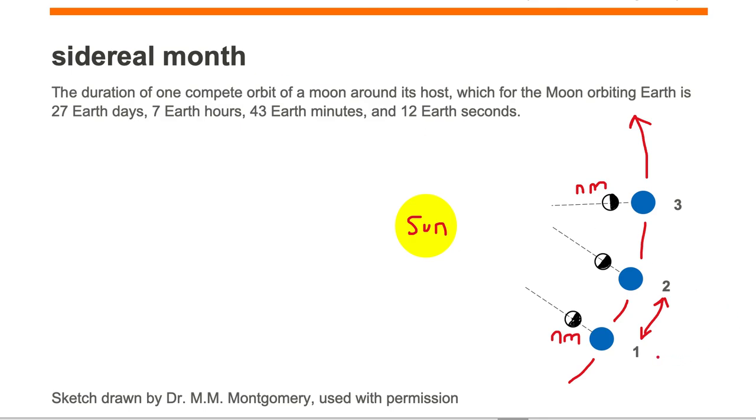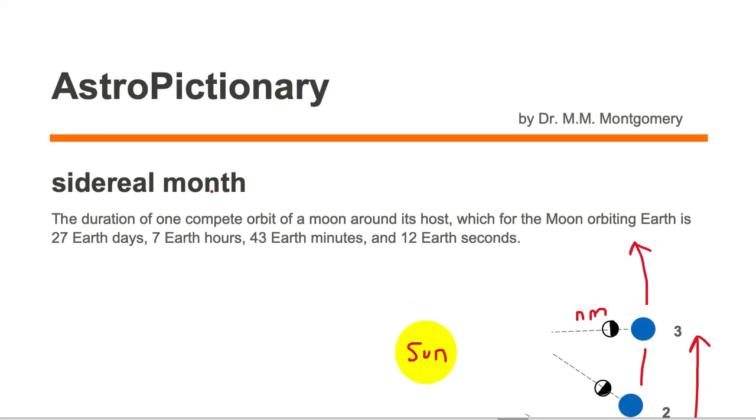The time it takes to go from position one to position three is a lunar month, whereas the time it takes to go from position one to position two is a sidereal month.